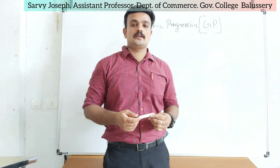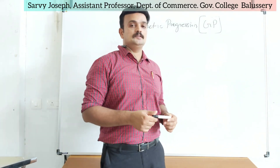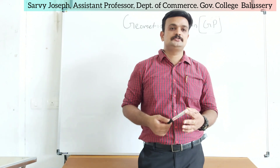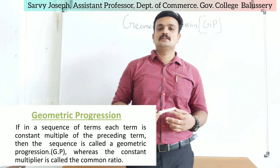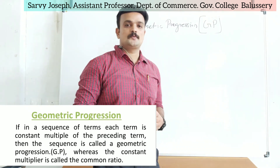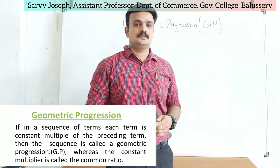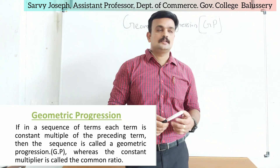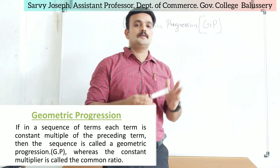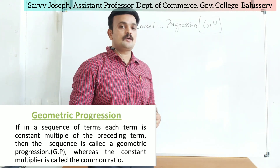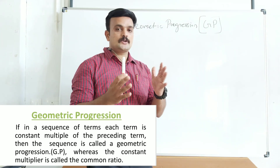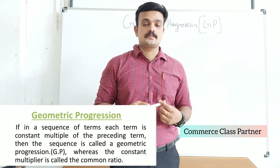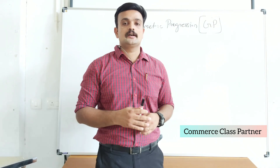Now we are moving to Geometric Progression, GP. As you see on the screen, if in a sequence each term is a constant multiplier of the preceding term, this sequence is called Geometric Progression. The constant multiplier here is known as the common ratio. There was a common difference in the case of Arithmetic Progression; here it becomes a common ratio.